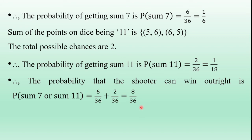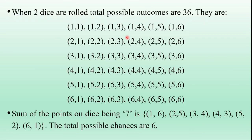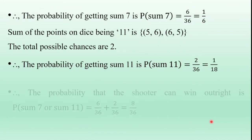The joint probability formula states: P(A union B) = P(A) + P(B) − P(A intersection B). Here, A intersection B is 0, because there is no common element — no outcome can simultaneously give a sum of 7 and a sum of 11. So sum 7 intersection sum 11 equals 0, confirming these are mutually exclusive events.